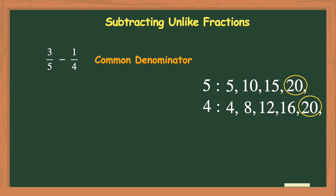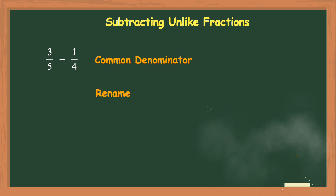My next step is to rename each fraction with my common denominator of 20. Looking at my first fraction of 3 fifths, I will need to multiply that denominator of 5 by 4 to get the common denominator of 20. I will also need to multiply the numerator of 3 by 4 because remember, whatever you do to the denominator, you must do the exact same thing to the numerator. So I will rename 3 fifths to its equivalent fraction of 12 20ths.